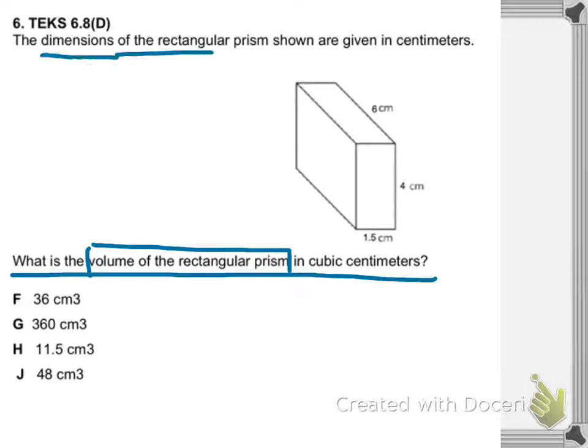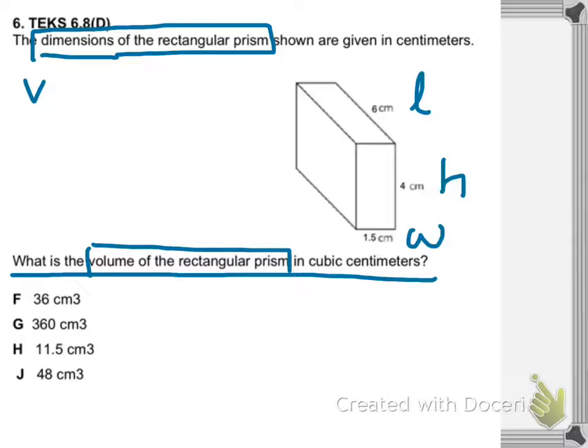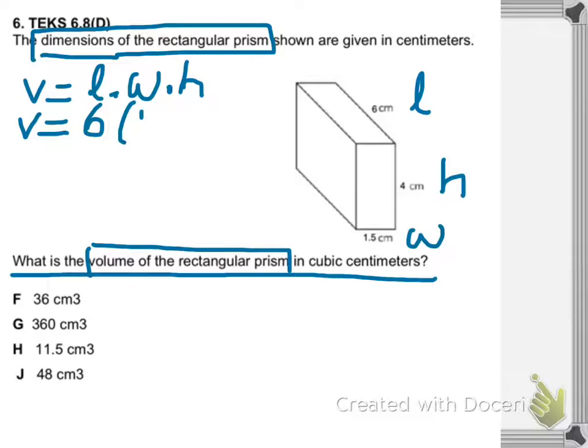The dimensions are given: length is six centimeters, height is four, and width is 1.5 centimeters. Write the formula: length times width times height. Substitute the values: six times 1.5 times four. Then choose two numbers that are easier to multiply — six times four is twenty-four, times 1.5.